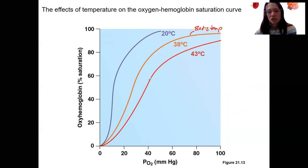A curve shifting right means releasing more oxygen. Hey, when our muscles are exercising and we start producing heat, this is going to help our body release more oxygen into those tissues. So this also makes sense.